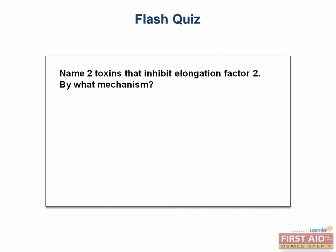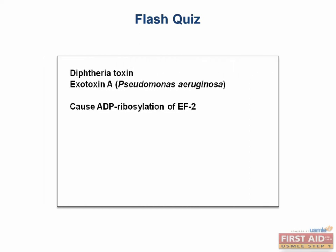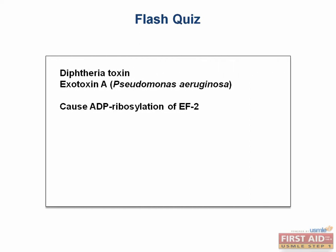Flash quiz: name two exotoxins that inhibit elongation factor II and describe the mechanism. The answer is diphtheria toxin and Pseudomonas exotoxin A. The mechanism is ADP-ribosylation of elongation factor II.